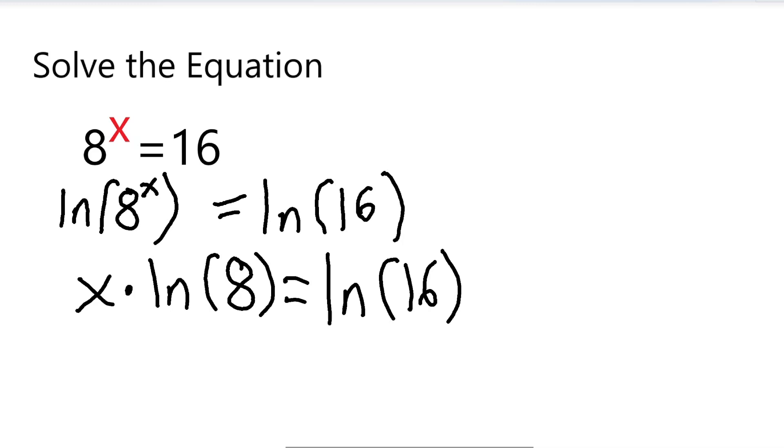So we have this here. So what do we do next? What do we always want to do to solve for x? We want to get x by itself. So x is being multiplied by natural log of 8, so let's just divide it by natural log of 8.